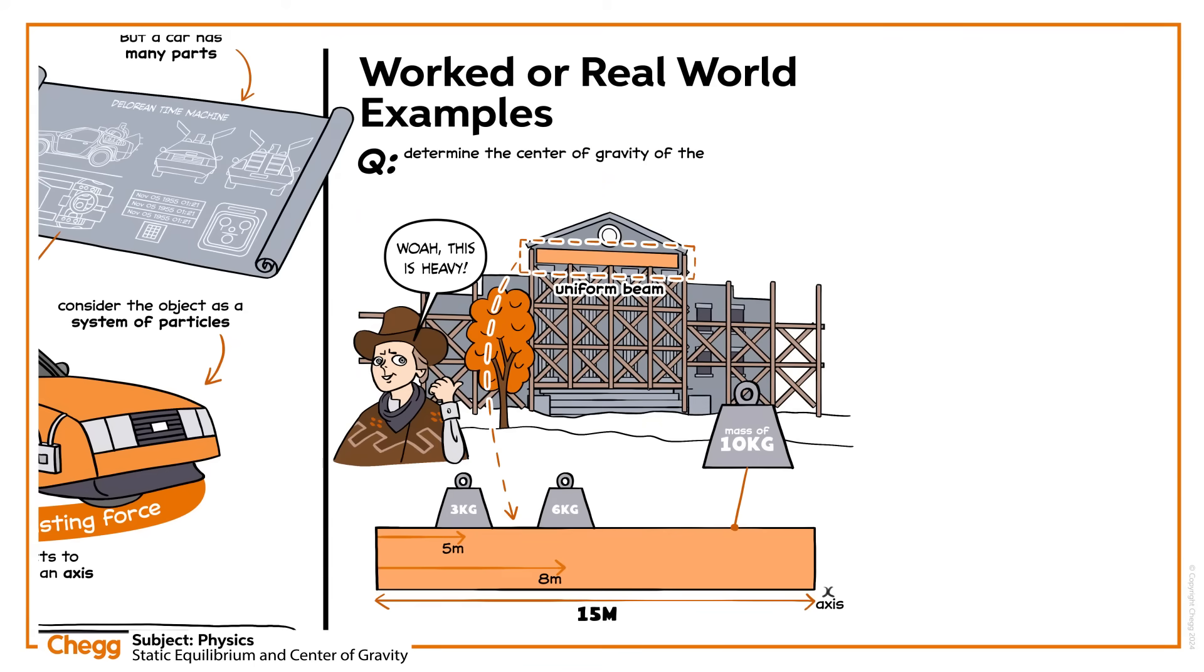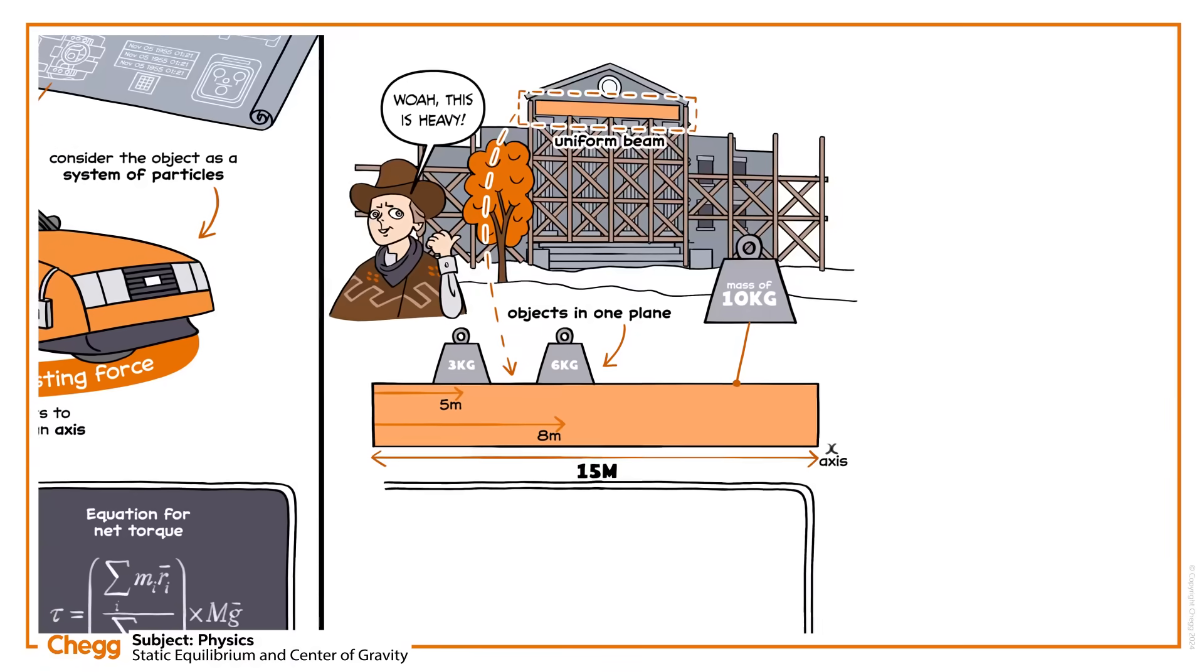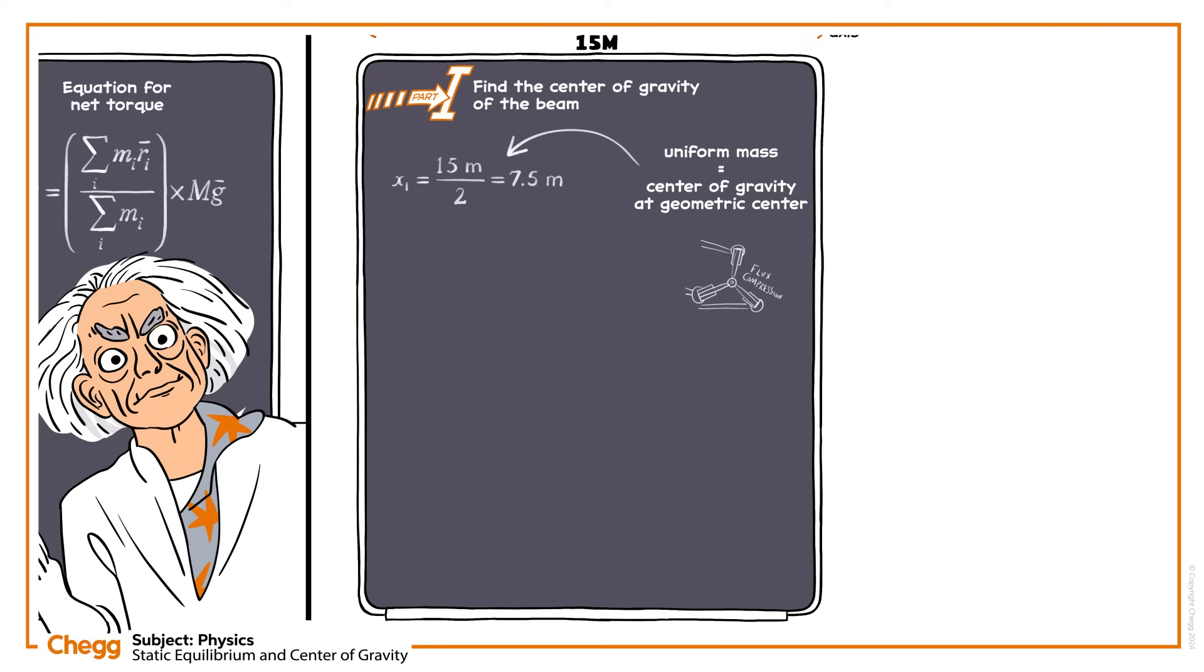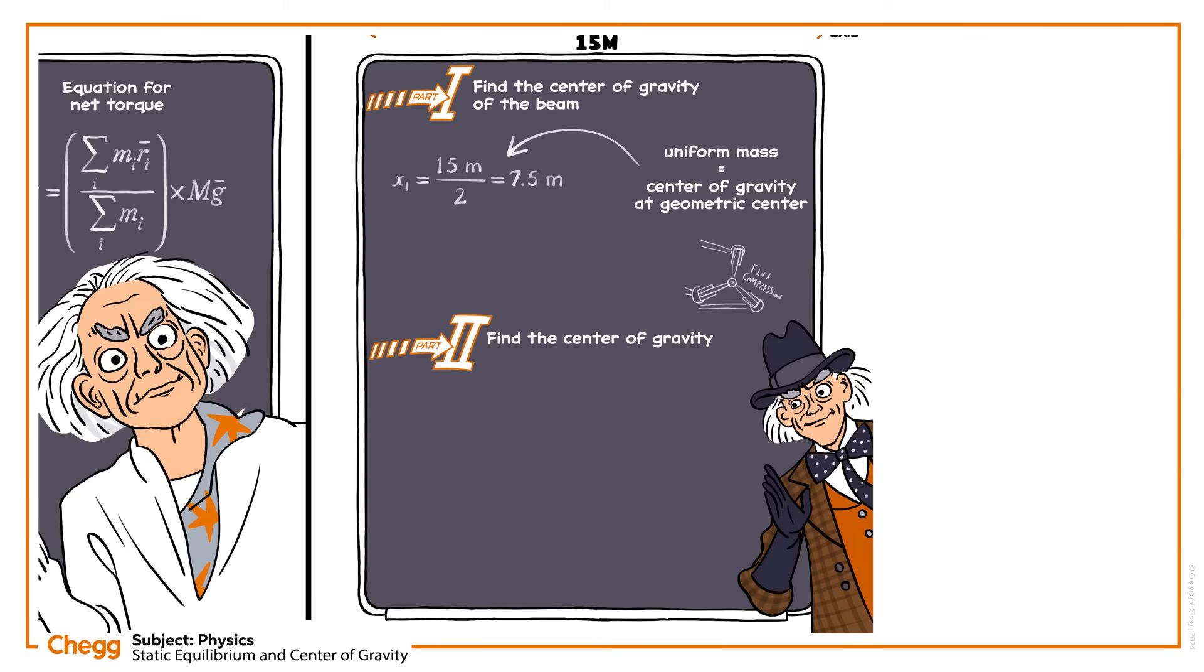Determine the centre of gravity of the entire system from the left end of the beam. We only need to consider the x-axis, since all the objects are in one plane. First, find the centre of gravity of the beam alone. As the beam is of uniform mass, its centre of gravity is at its geometric centre. Now find the centre of gravity of the entire system using the following expression. Inputting the values, we find the system's centre of gravity at 7.3m from the left end.